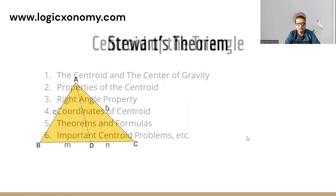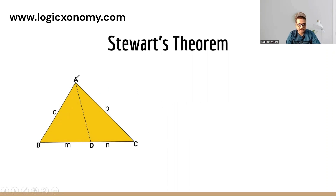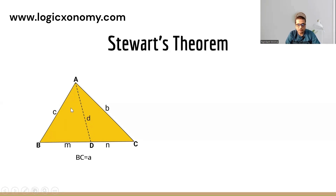Now, Stewart's theorem. In triangle ABC, the length of all the sides are given. The length of side AB is equal to c, AC is equal to b, and BC is equal to a. Here AD is the cevian and the length of AD is equal to d. If BD is equal to m and DC is equal to n, and the values of m and n are given, then we use Stewart's theorem to find out the length of AD. We are going to prove the formula for it.